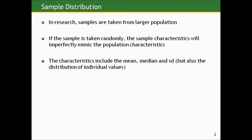Generally in research, samples are taken from a larger population, and generally only one sample is taken. If the sample is taken randomly, the sample characteristics will imperfectly mimic the population characteristics. By randomly, you could think of enumerating every person or subject in the population, putting all their names into a hat or a computer, shaking it up, and pulling out the number you needed for your study. That would be the idea of getting a random sample — one that is imperfect because it doesn't include everyone in the population, but is nevertheless representative of that population.